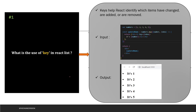Our first question is: what is the use of key in a React list? Keys help React identify which items have changed, added, or removed. Keys are mostly used when you are dealing with lists inside ReactJS. Here we have declared numbers from one to five, and we are printing those numbers using the map function. A key is something you can apply on the index — it works for a list of strings or integers.